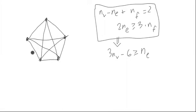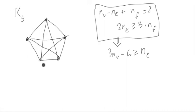This graph is called the complete graph on five things, notated with K5, because between any two vertices there's exactly one edge between them. These are undirected edges. In particular, every choice of two vertices has an edge between it.